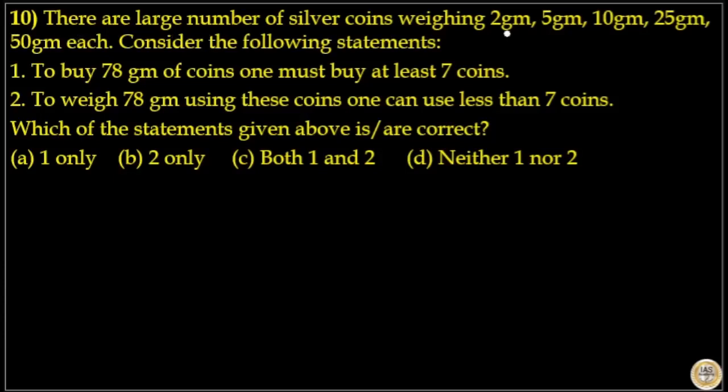There are large number of silver coins weighing 2 gram, 5 gram, 10 gram, 25 gram and 50 gram each. Consider the following statements. To buy 78 gram of coins, one must buy at least 7 coins. To weigh 78 gram using these coins, one can use less than 7 coins. Which of the statement given above is or are correct?